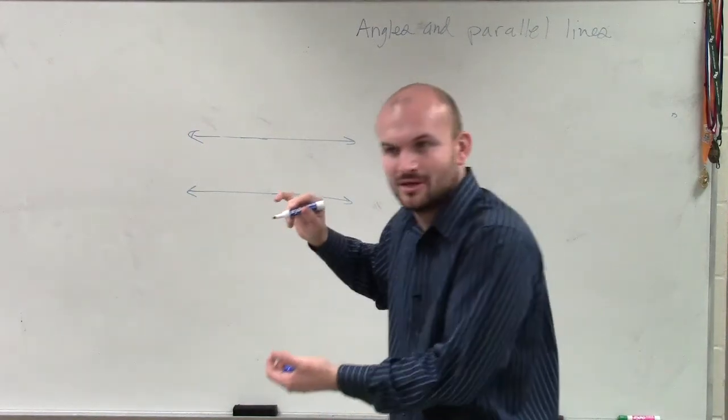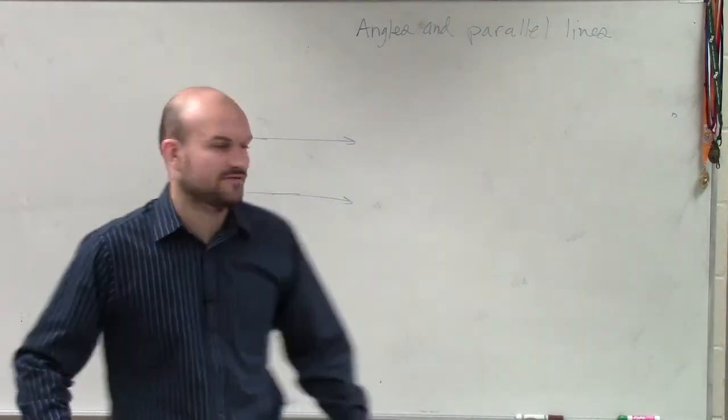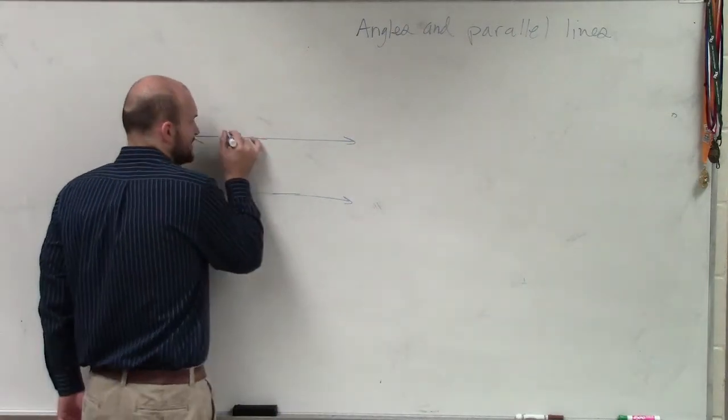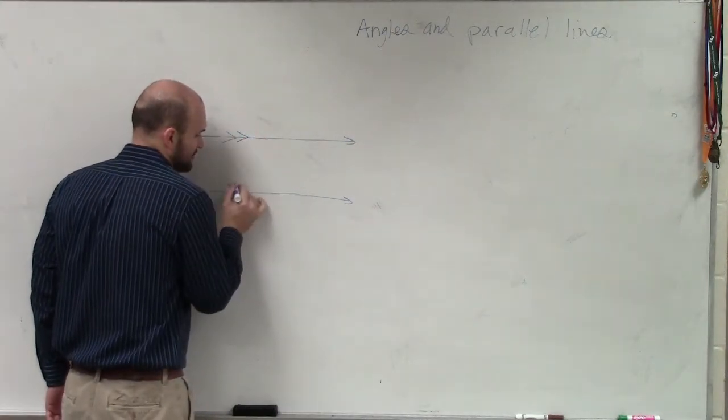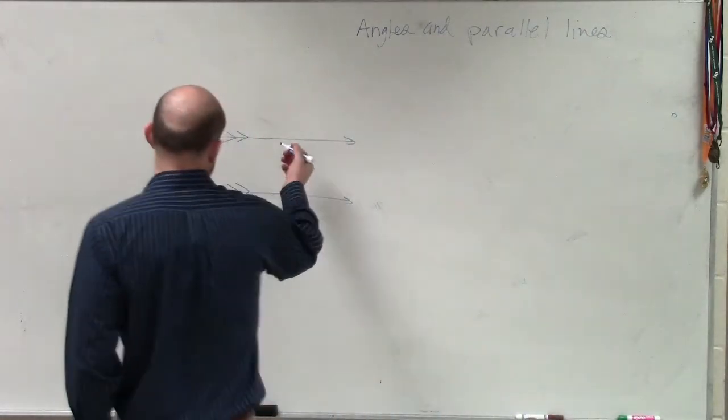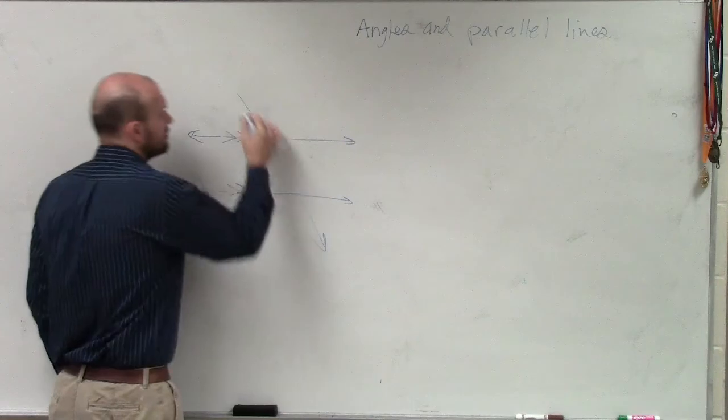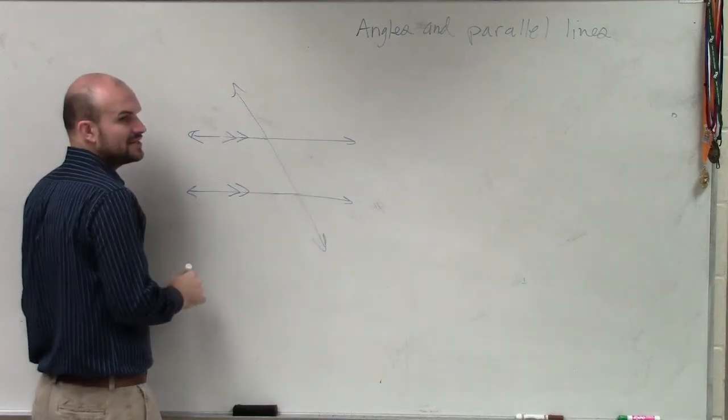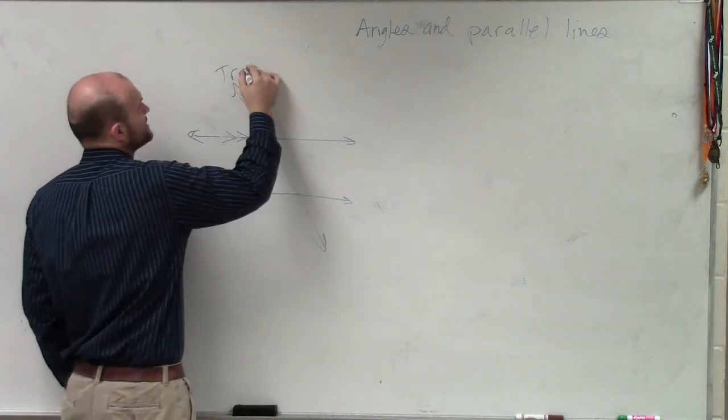But what do we show to represent their parallel? So we have these arrows, right? So you have the arrows, so you have parallel lines. Then we have another line that's going to cross, which we call our, what do we call this line that crosses parallel lines or any two lines? Transversal.